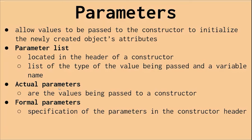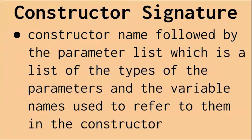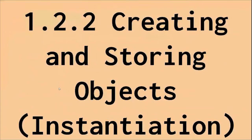Just know: formal is the general abstract parameter, and actual is the actual value. That's basically it for the rundown of what 1.2.2 is all about. You should know how to create objects, how to use the new keyword, and how to look at the different types of constructors by the end of doing 1.2.2.